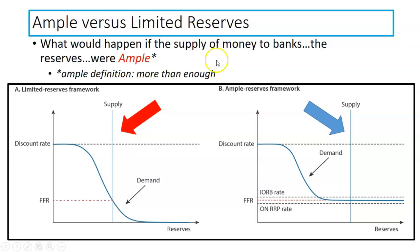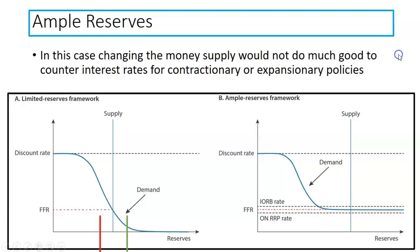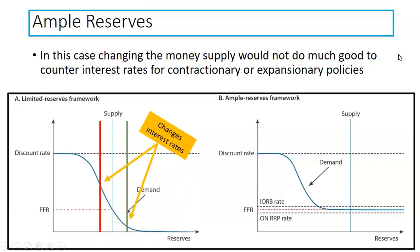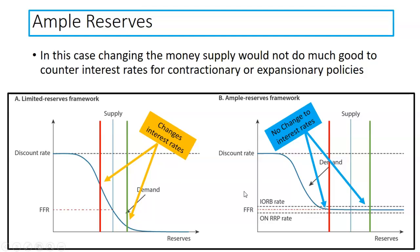Ample versus limited — the limited is this downward sloping portion. What's the ample reserve? It's on this last little segment — it's flat. So we can see that changing supply of money plays a role and changes interest rates on the limited portion. But in the ample portion, changing supply of money doesn't really change the interest rates. So the question becomes: if the Fed is trying to influence how banks interact, trying to expand or contract the economy, changing supply to influence the federal funds rate no longer plays a role — it no longer does what we need it to.